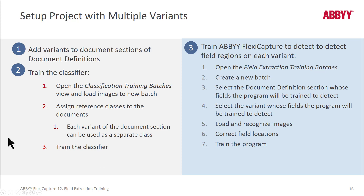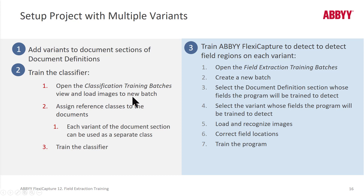We can also set up a project with multiple variants, and there's another mode we need to enter when we do that. The first thing is to add your document definition with document sections with multiple variants. Then open the Classification Training Batch — click View Classification Training Batch, right-click New Batch, and load images to that new batch. Then you're going to have to assign reference classes, drilling down to the document section variant level.